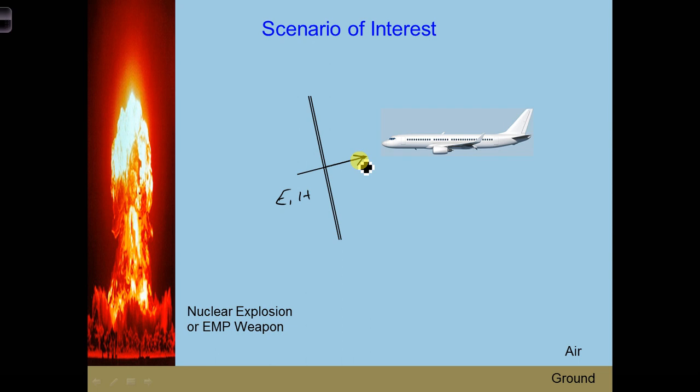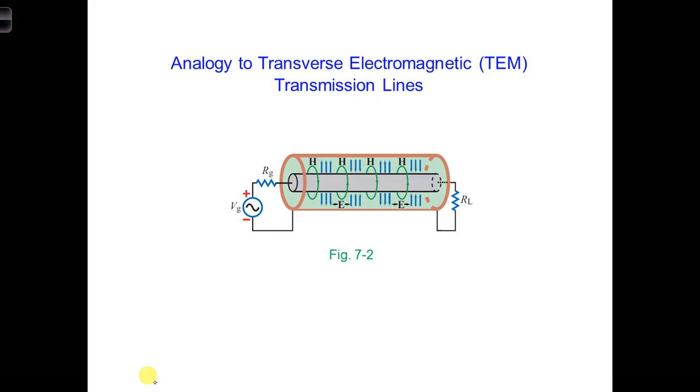But we've seen this before, right? Where we have fields that only change in one direction? Like in the transmission lines section of this class, along a transverse electromagnetic transmission line, TEM transmission line.